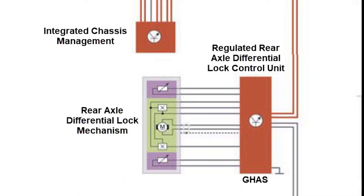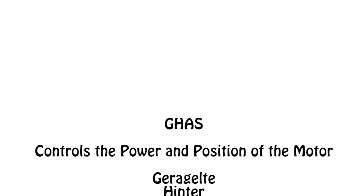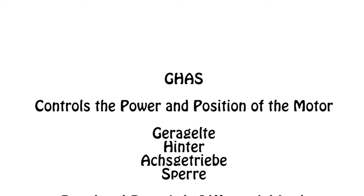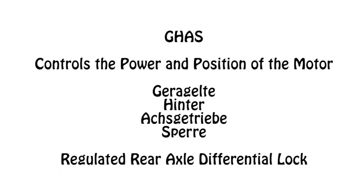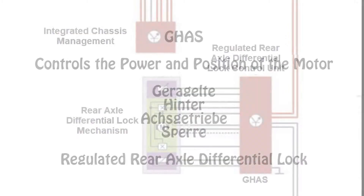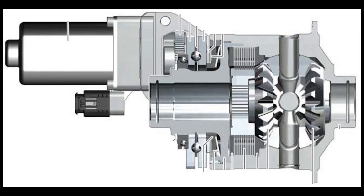The Regulated Rear Axle Differential Control Unit controls the power and the position of the motor in the differential. The GHAS Control Module — German for Geregelte Hinterachsgetriebe Sperre, which translates to Regulated Rear Axle Differential Lock — performs a reference run after the engine is shut down to compensate for wear. This is performed every 621 miles or after an energy input of 100 kilojoules. There are two Hall Effect switches inside the motor to keep track of its position.